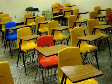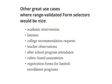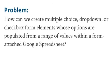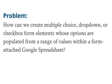Things would sure be much easier if dropdown options could be populated dynamically from a range like they do for cell validation within a spreadsheet. We've got plenty of other use cases that present the exact same challenge, all of which involve selecting from options that are likely to change over time. In other words, the problem of practice we seek to solve is how can we create multiple choice, dropdown, or checkbox form elements whose options are populated from a range of values within a form attached to a Google spreadsheet.